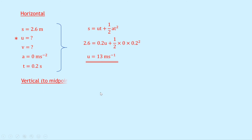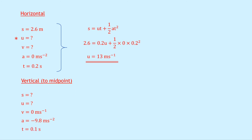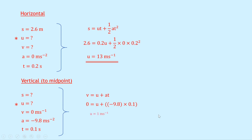For the vertical component, we consider motion from launch to maximum height — the midpoint. Using suvat: s is unknown; u is unknown (what we want); v is 0 meters per second; a is minus 9.8 meters per second squared; t is 0.1 seconds (half the total flight time of 0.2 seconds). Using v equals u plus at: 0 equals u plus (minus 9.8) times 0.1, giving u_v equals 1 meter per second.